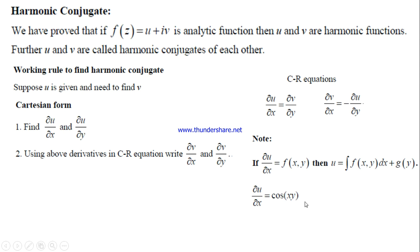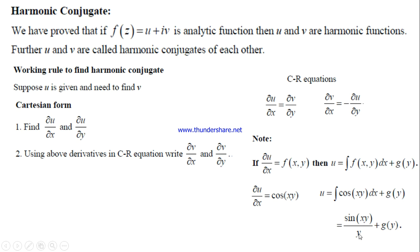For example, suppose ∂u/∂x = cos(xy). Integrating with respect to x, treating y as constant like a constant 'a', gives sin(xy)/y plus an integration constant g(y). This is the value of u. If we differentiate sin(xy)/y with respect to x, we get y·cos(xy)/y = cos(xy), recovering ∂u/∂x. So we can find u simply by integrating ∂u/∂x with respect to x.